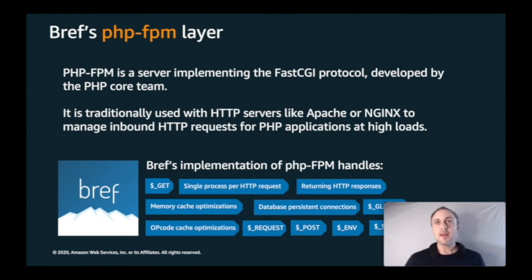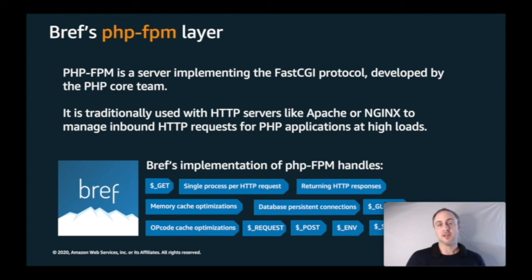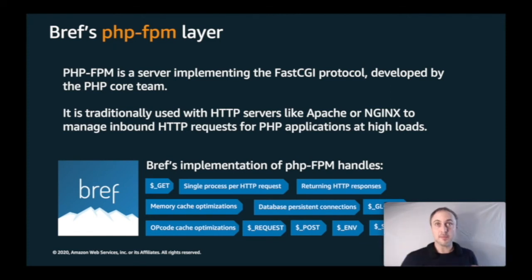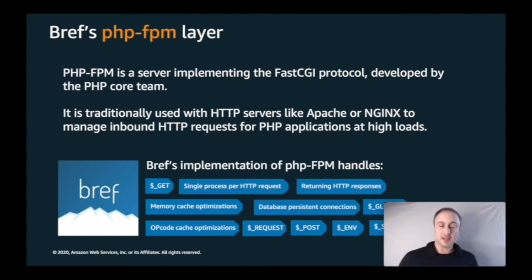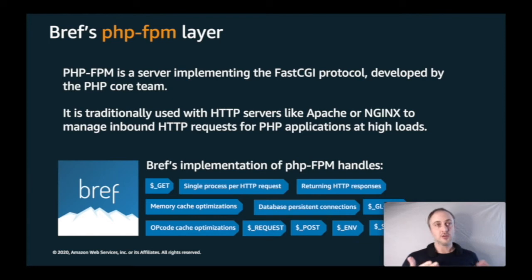Bref's own implementation of FPM takes care of several things: it makes sure to run each HTTP request in a new process, which is the foundation of PHP's shared-nothing execution model. It also populates all the global variables you're used to using like GET and POST, accessible from within your Lambda function. It also provides a mechanism for PHP scripts to return HTTP responses back to the browser via Amazon API Gateway — an HTTP response as opposed to the default JSON response.